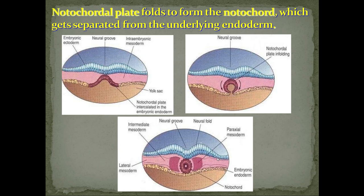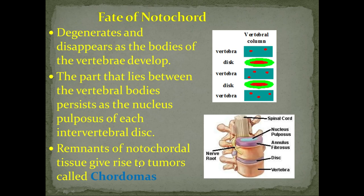There is also formation of mesoderm — we'll study that later. What is the fate of the notochord? It actually degenerates and disappears as the bodies of the vertebrae develop. It just forms the intervertebral discs. The part that lies between the intervertebral bodies persists as the nucleus pulposus of each intervertebral disc. Sometimes remnants of notochord tissue can give rise to tumors known as chordomas.